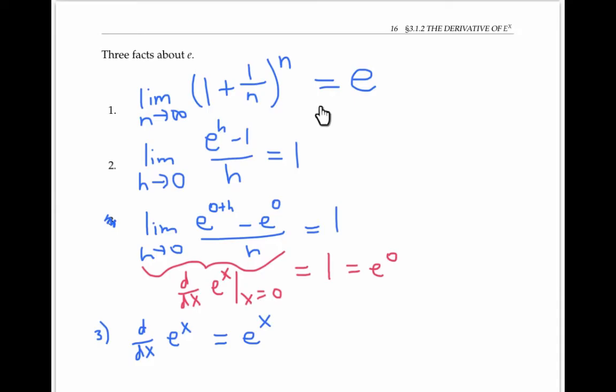Now, fact 1 is frequently taken as the definition of e. Sometimes fact 2 instead is taken as the definition of e since e is the unique number with this property. It's the unique number you can plug in here and get this limit to equal 1. It's possible to prove that fact 1 implies fact 2 and vice versa, but I won't do that here. It's also possible to prove that fact 2 implies fact 3 about the derivative in general. And that's pretty straightforward from the definition of derivative. So I will show you that argument.